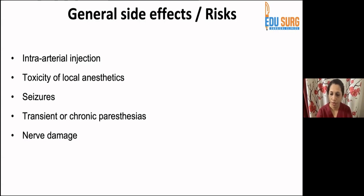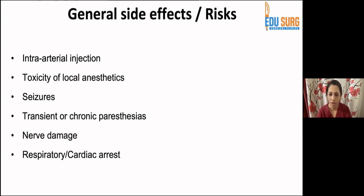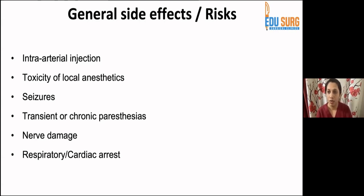Respiratory and cardiac arrest can occur in two scenarios: accidental intravascular injection of a local anesthetic agent, or overdose of local anesthetics. It can also happen with a high or total spinal, where the level rises above T4, causing first respiratory arrest and then cardiac arrest.